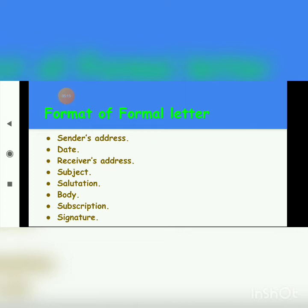Here you have to write two addresses. There is a difference between informal and formal letters. In an informal letter, we write only our own address — we don't write the address of the person we are writing to. In a formal letter, we write two addresses. Also, we never write a subject in an informal letter, but we always write a subject in a formal letter.